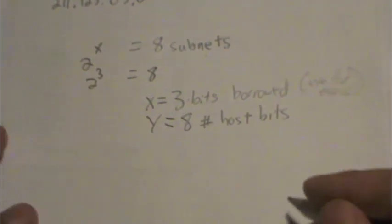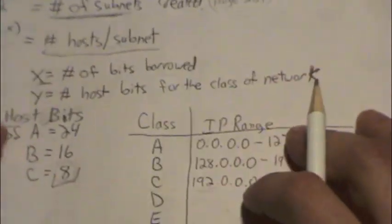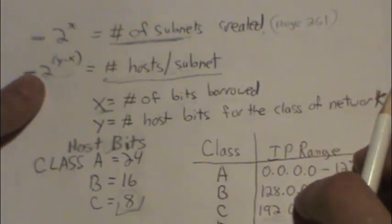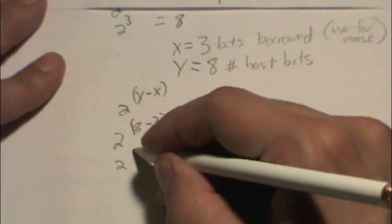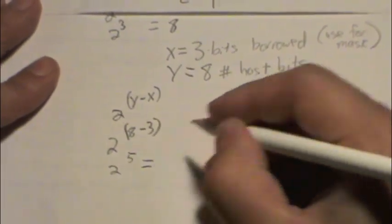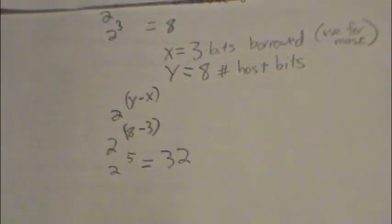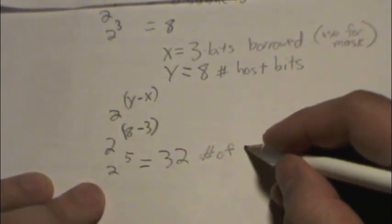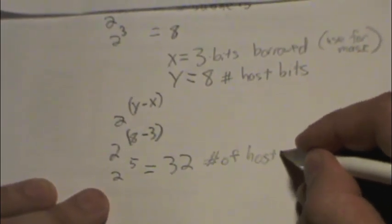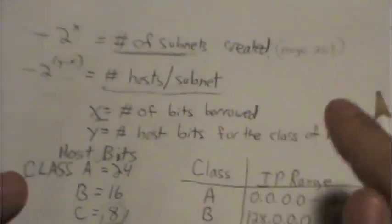This is also going to be used to determine our mask, and 8 is the number of host bits. So let's go ahead and solve 2 to the... We're going to use this equation here, 2 to the y minus x. So 2 to the 5th, which 2 to the 5th equals 32. 32 is equal to the number of hosts per subnet. Because that's what our equation tells us here, 2 to the y minus x equals the number of hosts per subnet.